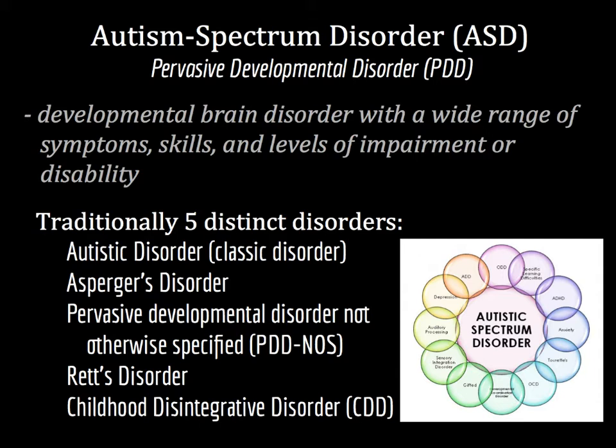Rett syndrome is a non-inherited neurological disorder that affects mostly girls and develops after the sixth month of life. Prior to that, infants hit major milestones, but then suddenly experience loss of coordination, speech, and the use of their hands. Finally, childhood disintegrative disorder, or Heller's syndrome, typically manifests between three and four years of age — later than typical autism. Individuals experience sudden developmental delays, and often reversals in development, including loss of language, social function, and even motor skills like walking.